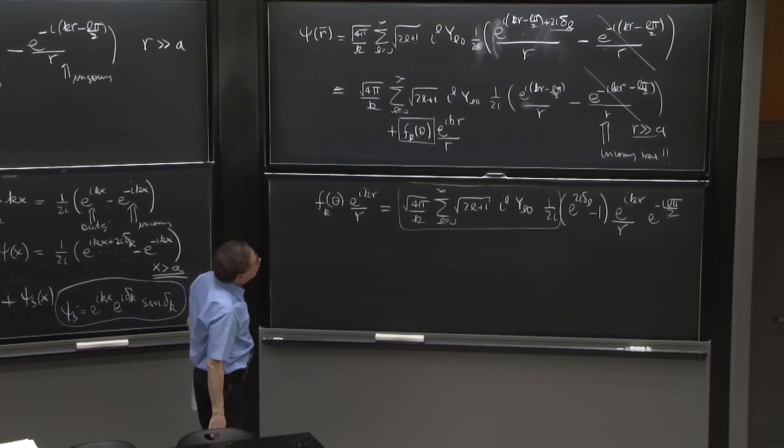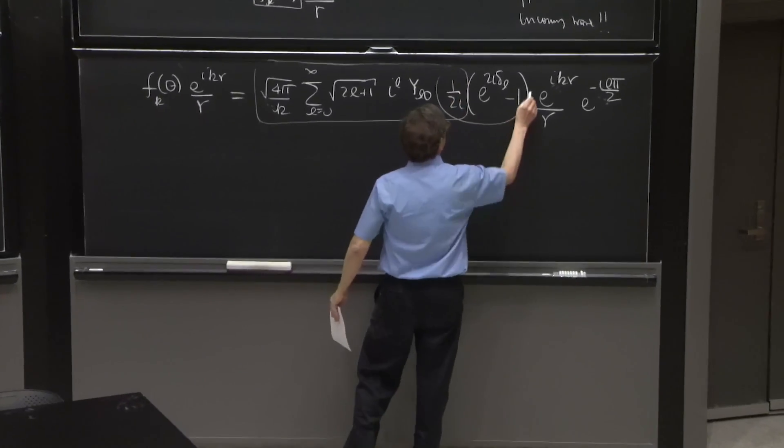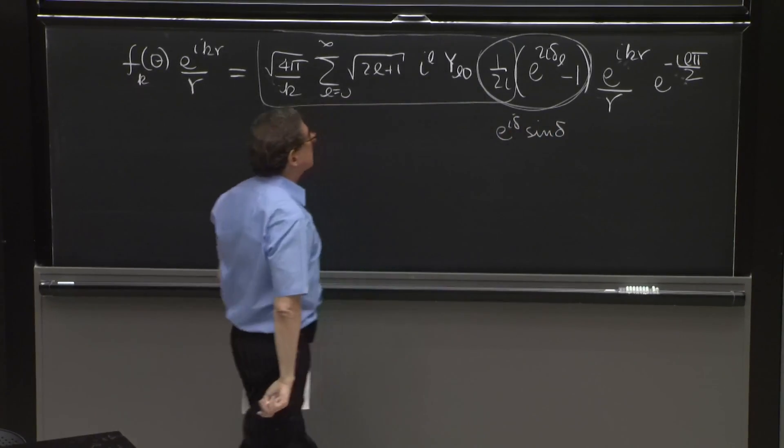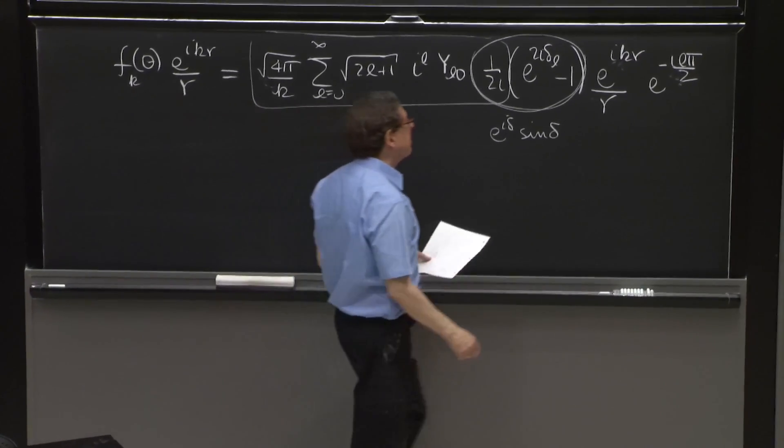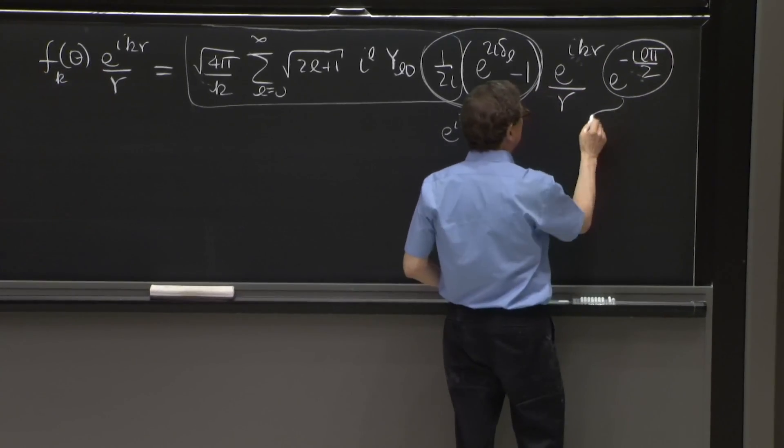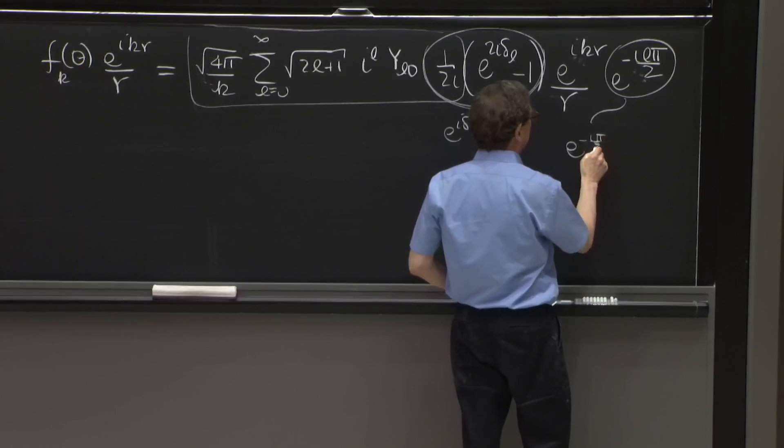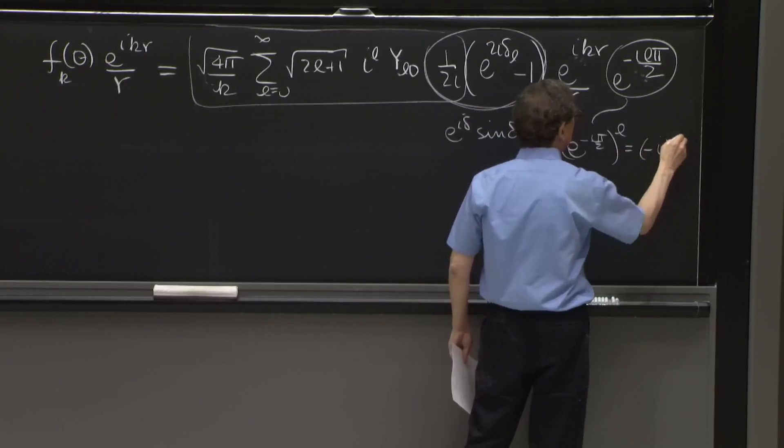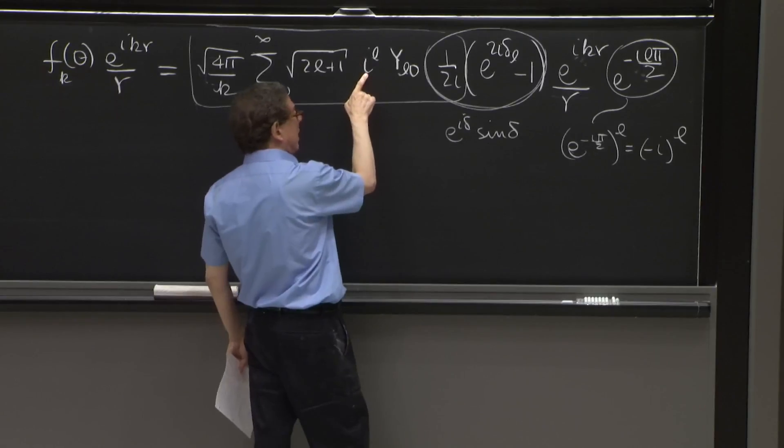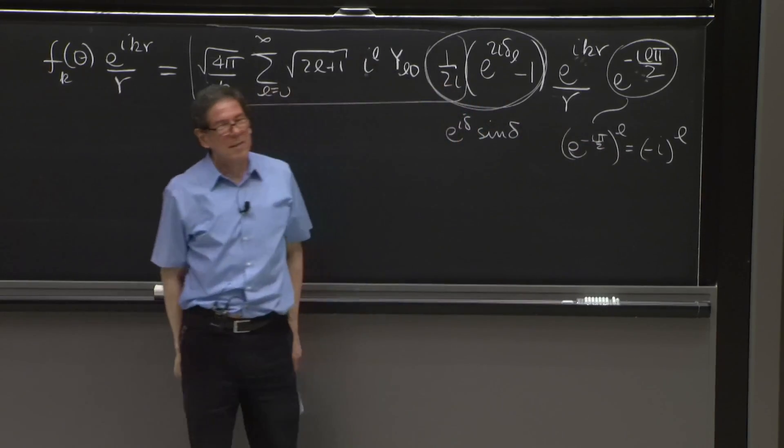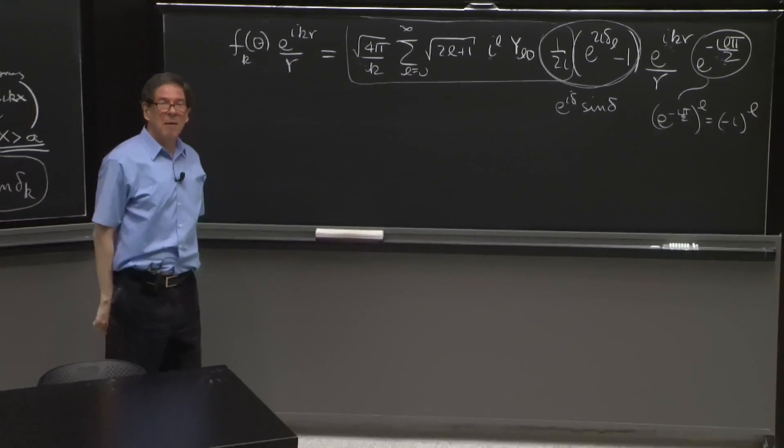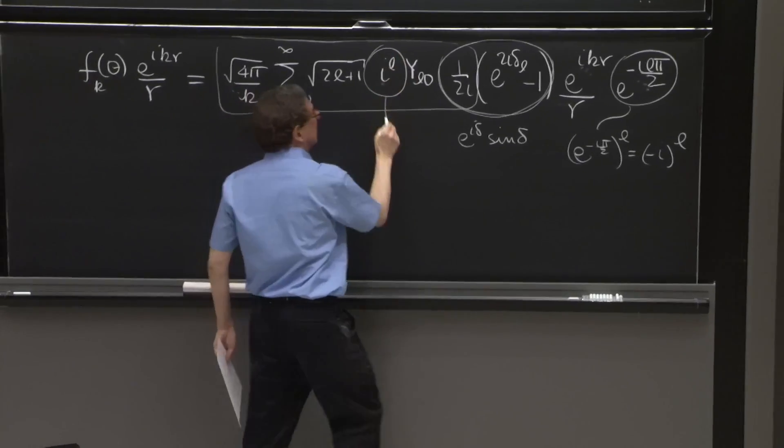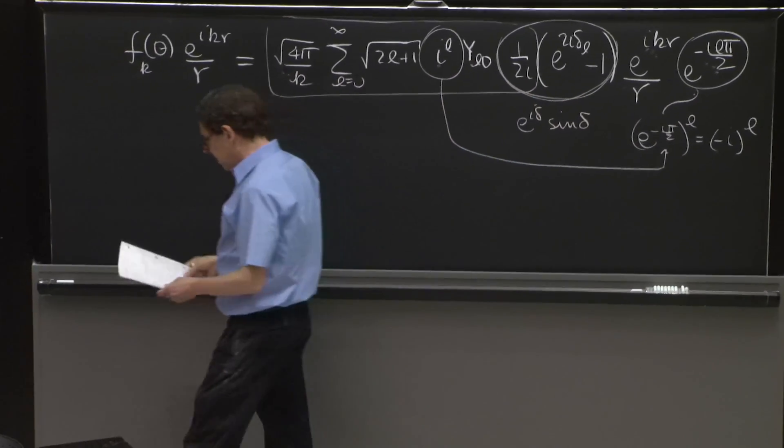So what do we get here? This part is e to the i delta sine delta. And this part is e to the minus iπ/2 to the power L, which is minus i to the L. And i to the L times minus i to the L is happily just 1. i times minus i is 1, and 1 to the L is 1. So this term and this term cancel.